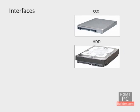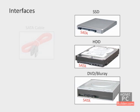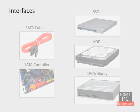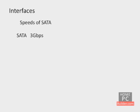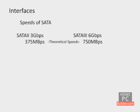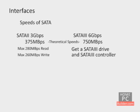Modern SSDs, hard drives, and DVD or Blu-ray drives connect to the computer through a data cable to a SATA controller on the motherboard. There are two speeds of SATA: SATA 3 Gbps and SATA 6 Gbps, also called SATA 2 and SATA 3 respectively. SATA 2's 3 Gbps translates to 375 MBps, and SATA 3's 6 Gbps translates to 750 MBps. These are theoretical speeds. Even the fastest SSD, when running on a SATA 2 controller, maxes out at 280 MBps when reading and 260 MBps when writing. To get past these limits, you will need a SATA 3 drive and a SATA 3 controller on your motherboard.